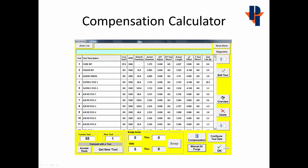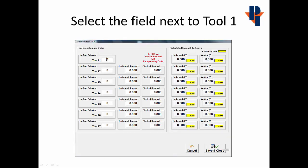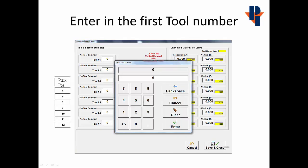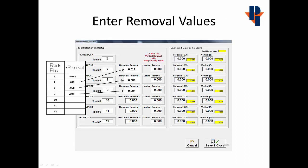Removal Amount is entered into the Compensation Calculator. We'll do this by choosing the Compensation icon. This opens up the Compensation Calculator screen. To start, we'll select the field next to Tool Number 1 by pressing on it. This allows us to enter the number of the first rack position of our profile set, which will fill out the next seven tool locations.